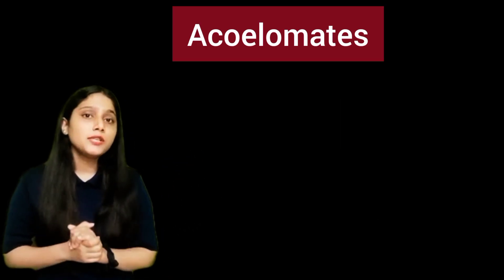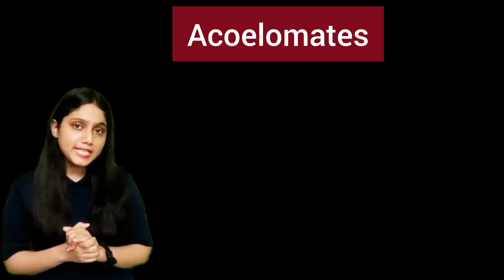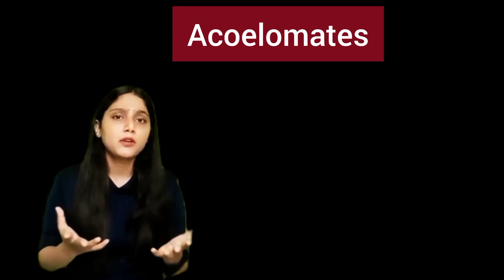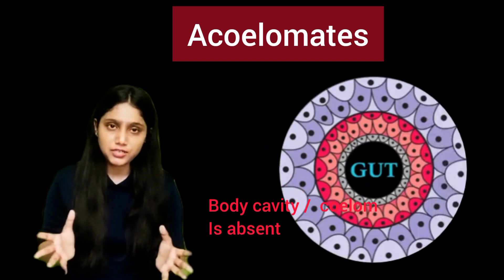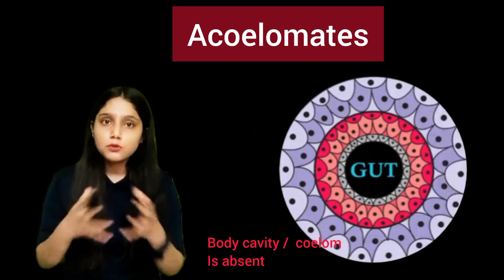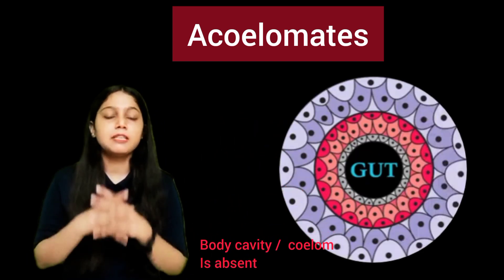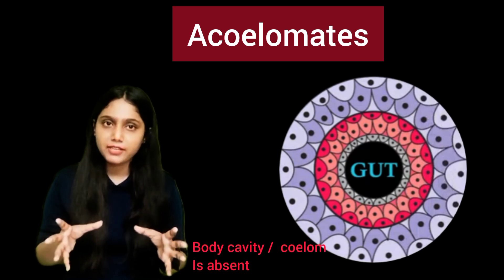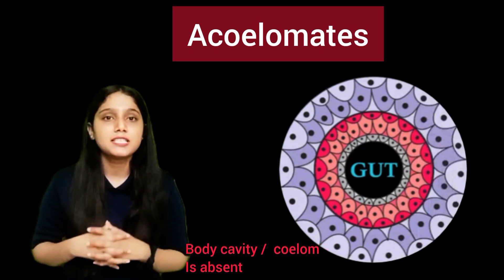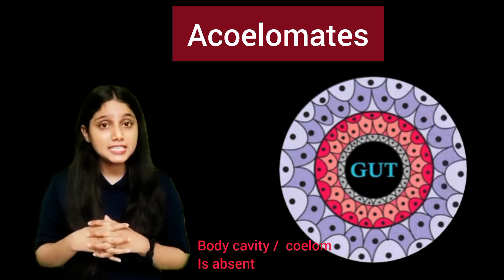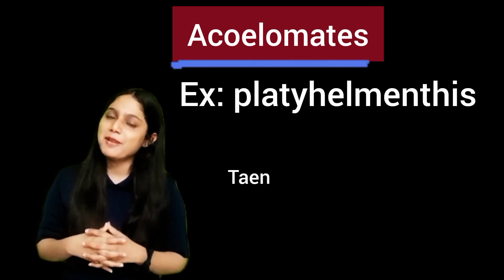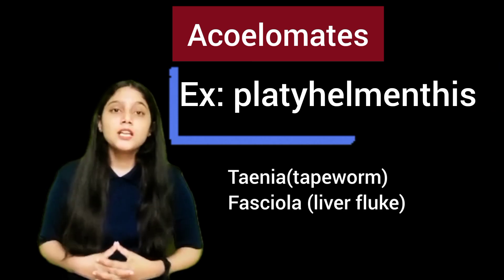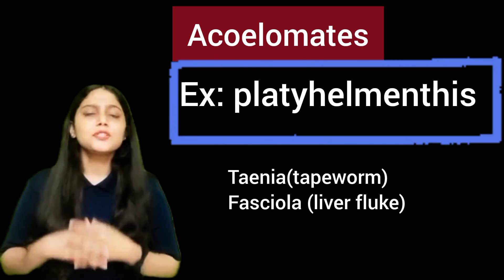Next, we are going to talk about acoelomate organisms. In acoelomate organisms, we see no coelom — there is no body cavity present. Such organisms are called acoelomates. The example is phylum Platyhelminthes. So, that was all about coelom. I hope you have come to understand.